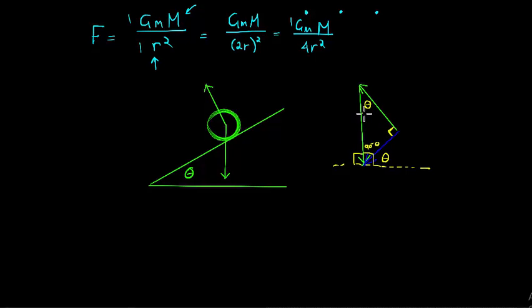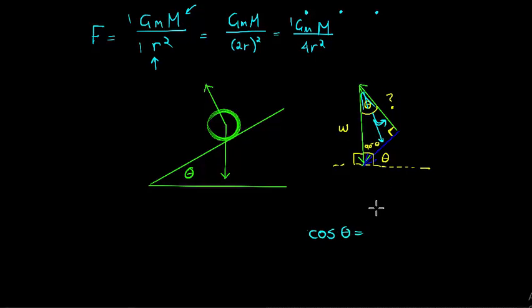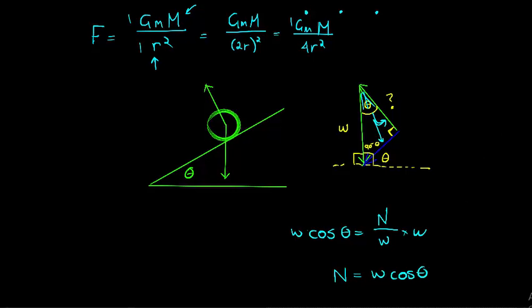In this triangle, theta is the observed angle. The weight w is the hypotenuse (longest side), and the normal force is the adjacent side. Using trigonometry: cos(theta) = adjacent / hypotenuse = Normal Force / w. Multiplying both sides by w gives Normal Force = w·cos(theta).